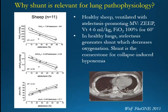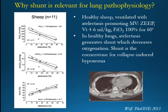Why is shunt relevant for lung pathophysiology? This is a study on healthy sheep from the group of Marcelo, ventilated with atelectasis-inducing ventilation — zero PEEP, low tidal volume, high FiO2 for 60 minutes. This generated atelectasis, and you can see that shunt is correlated with atelectasis, and PaO2 is correlated with atelectasis. So the more atelectasis, the more shunt, and the lower the PaO2.